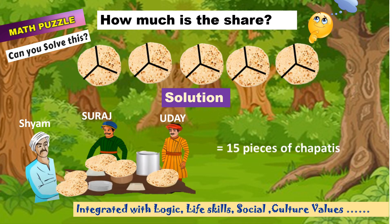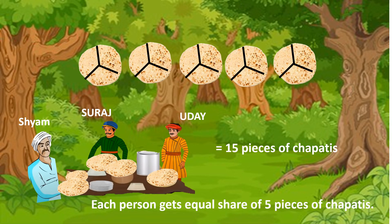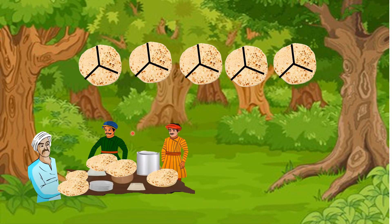Now let's see what's the solution. We have seen in the previous video that Suraj, Uday, and Sham shared the rotis equally among each other. In each roti they made three pieces, so total 15 pieces of chapatis, and each person got an equal share of five pieces.